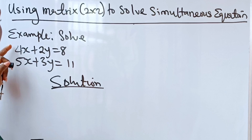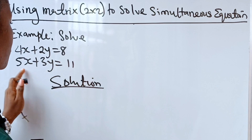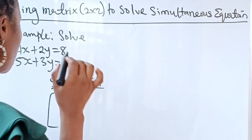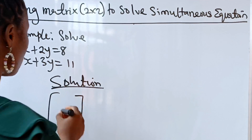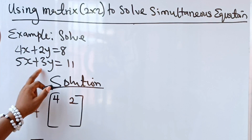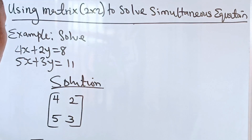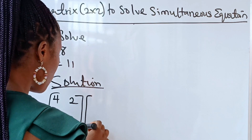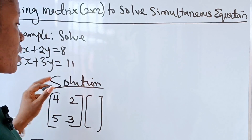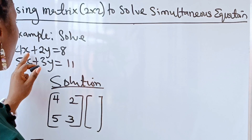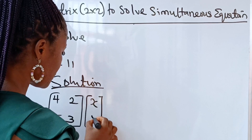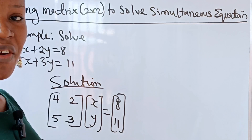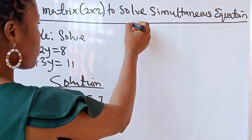We are going to pick the coefficients of x and y — that is 4, 2, 5, and 3 — and arrange them in a 2x2 matrix. So 4 and 2 will form our first row, and 5 and 3 will form our second row. We then multiply this matrix by our variables x and y, and set it equal to our constants 8 and 11. You can see how easy it is to arrange.